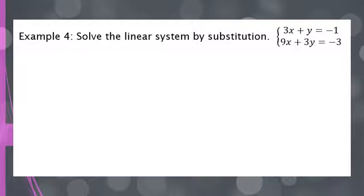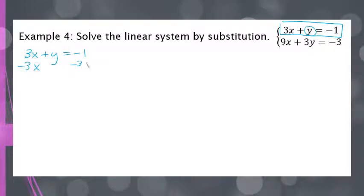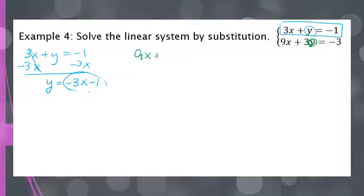We're looking for a variable with a coefficient of positive 1, and we have it in the top equation. I'm going to solve it for y by rewriting 3x plus y equals negative 1 and subtracting 3x from both sides. That gives me y equals negative 3x minus 1. Now I take this expression and replace y in the second equation, writing 9x plus 3 times negative 3x minus 1 equals negative 3.